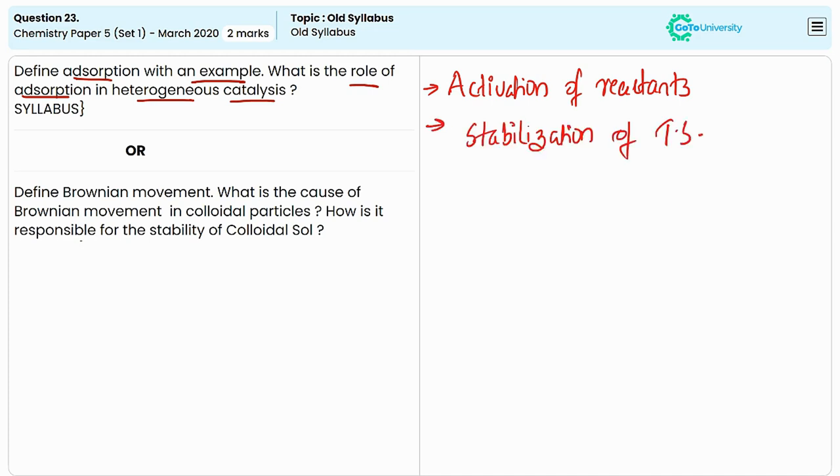The second one is the stabilization of transition state. By adsorbing onto the surface of the catalyst, the reactants can be stabilized in a manner that lowers the activation energy needed for the reaction. The stabilization of the transition state helps to speed up the reaction.